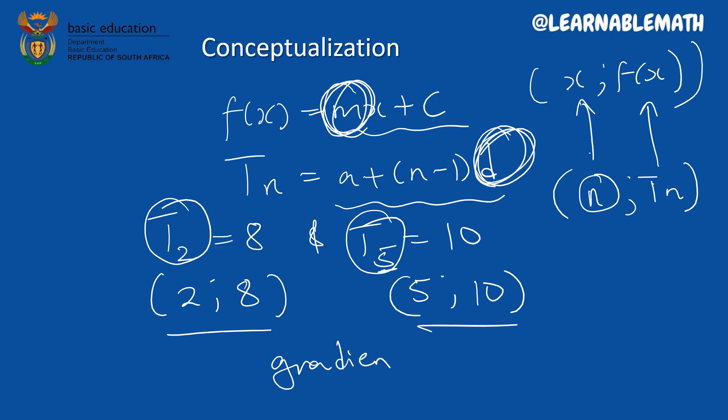So you now have two points. You can now go and find your gradient. Finding the gradient between these two points would mean that you have calculated your common difference. And this is the inspiration of that formula. Hence, we said to find the common difference would say term number 5 minus term number 2 divided by the difference between the natural positions of these terms, which is 5 minus 2.